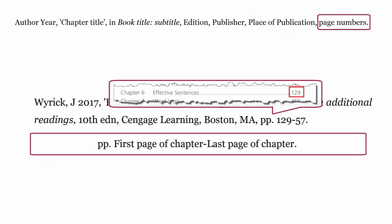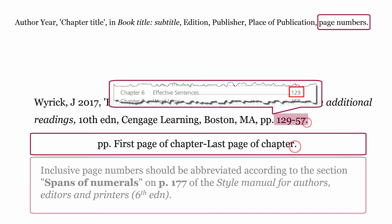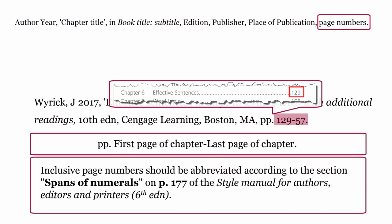Page numbers: these are the page numbers of the chapter, formatted as PP. followed by the first page of the chapter, a dash, the last page of the chapter, and the page numbers with a full stop. Inclusive page numbers should be abbreviated according to the section on spans of numerals on page 177 of the Style Manual for Authors, Editors, and Printers, 6th edition.